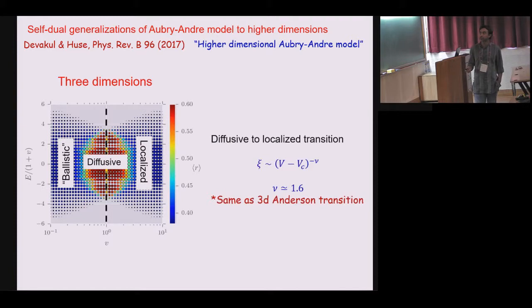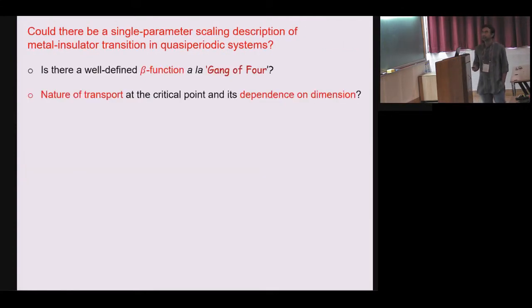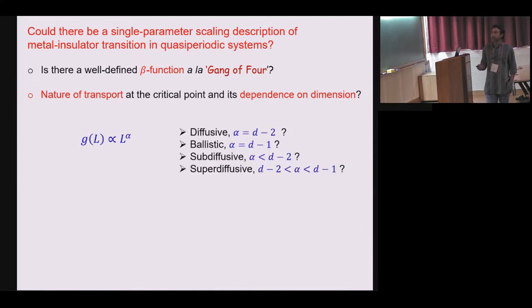Moreover, they found that if you look into this transition from localized to diffusive you find that the critical exponent basically follows localization length with some critical exponent which is same as 3D Anderson. So now the question that I am going to state here is could there be a single parameter scaling description even for quasi periodic system. Is there a well defined beta function that you can define and what is the nature of transport.